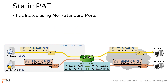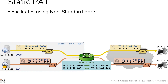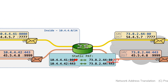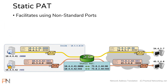This can also work in the other direction. If you're using a standard port on the inside but want it accessed from a non-standard port on the outside, you can rewrite your static PAT to include the non-standard port on the outside and a standard port on the inside. In either case, anytime you're using non-standard ports, a static PAT can help facilitate and make things easier for you and your users.